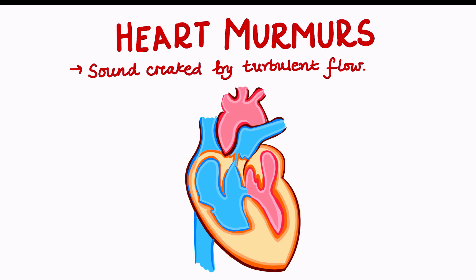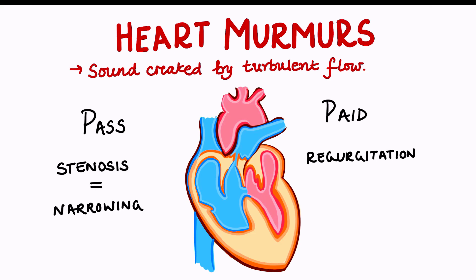Murmurs are caused by the abnormal functioning of these valves, and we can use the mnemonic PASS PAID to remember the features of these common murmurs. The two main phrases to remember are stenosis and regurgitation. Stenosis is a narrowing of the vessel, whereas regurgitation is when there is a backflow of blood as the valves cannot close properly.